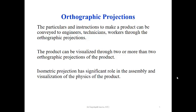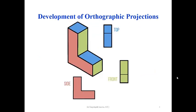Isometric projection has a significant role in assembly and visualization of the physics of the product. Especially to understand the location of each and every component in an assembly, isometric projection plays an important role. Now we look at the development of orthographic projections from isometric projection.